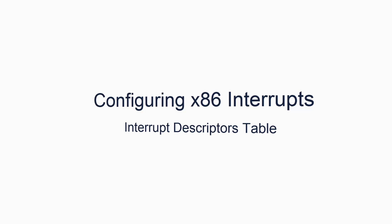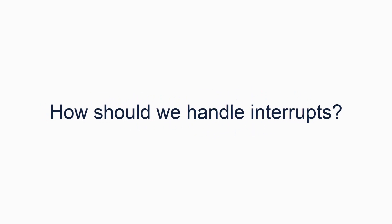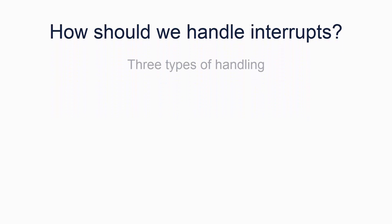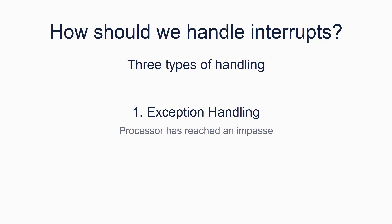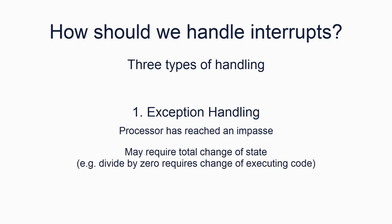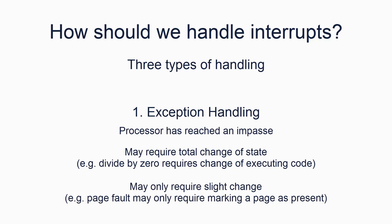You'll notice that the sample code provided has only empty methods for the various interrupt handlers. This is because we don't yet know how to handle the various types of exception or interrupt. On the x86, there are three main types of handling you have to know about. The first is exception handling — this is when the processor reaches a point where it can't continue executing without help of some kind. Some exceptions require you to entirely change the state of execution that will be returned to, such as a divide by zero exception. Others only require you to modify the state slightly before returning, such as a page fault. In our simple code, we will not have proper handlers for any of the exceptions; we will just be outputting messages to say they happened and then attempt to return execution to where it was.